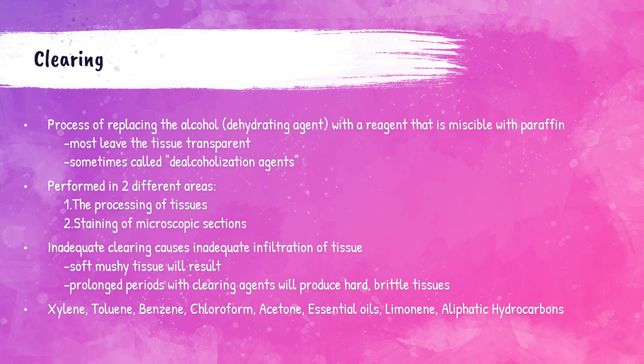The purpose of clearing is to remove the dehydrating agents from the tissue and prepare it to be impregnated with the embedding agent. Most clearing agents cause the tissue to become transparent. Clearing is performed in two areas of the histopathology laboratory: when processing tissue samples and when staining microscopic tissue sections. Clearing agents are frequently called de-alcoholization agents; they must be miscible with both the dehydrating agent and the infiltration medium. Inadequate clearing, like inadequate dehydration, will cause soft, mushy tissue; prolonged exposure to a clearing agent will cause the tissue to become hard and brittle. Common clearing agents include xylene, toluene, benzene, chloroform, acetone, essential oils, limonene, and aliphatic hydrocarbons.